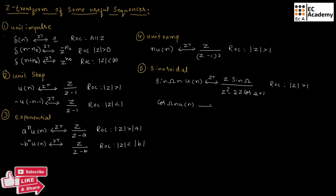If we consider cos(ωn) U of n and perform Z-transform, we will get Z minus Z cos omega, whole divided by Z squared minus 2Z cos omega plus 1. Here ROC will be magnitude of Z greater than 1.